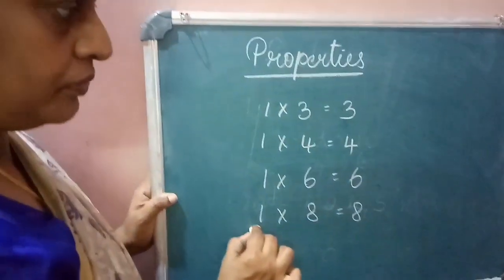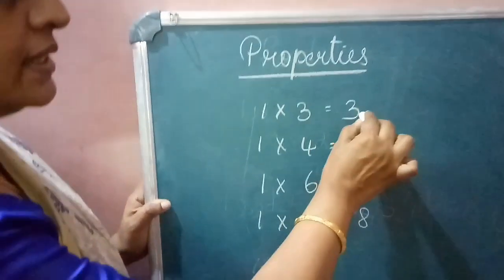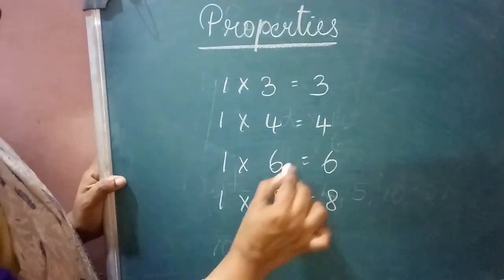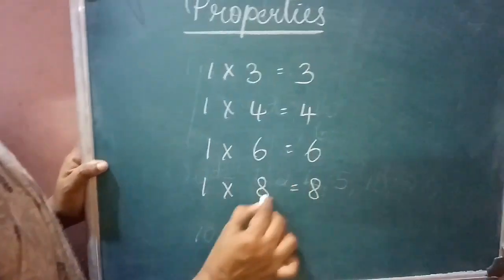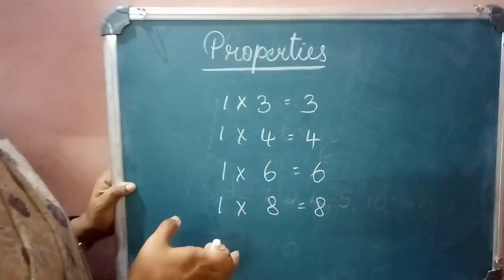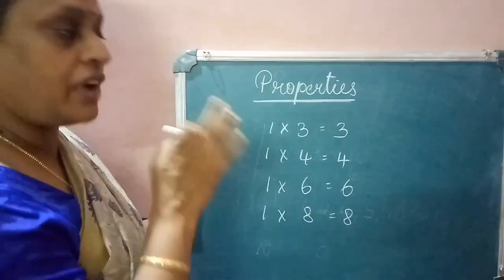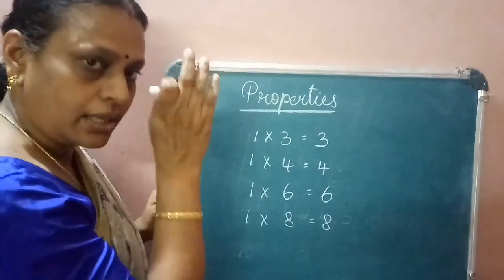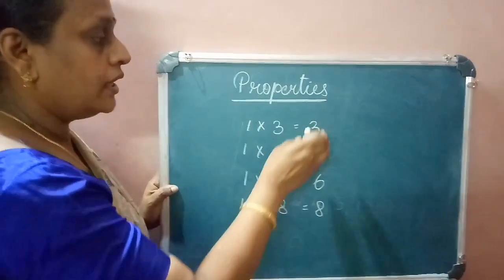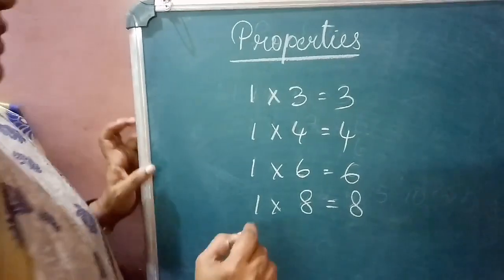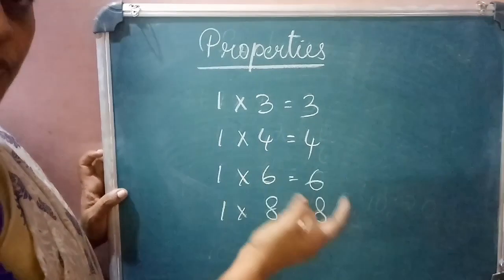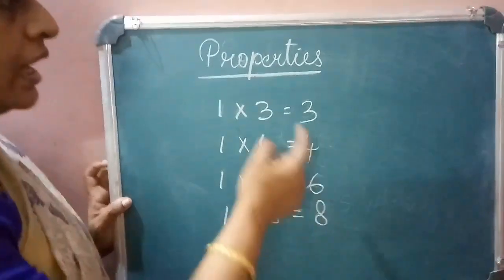Looking at the numbers 3, 4, 6, and 8 — each number itself appears as a factor. So every number is a factor of itself. These are the first two properties: 1 is a factor of every number, and every number is a factor of itself.